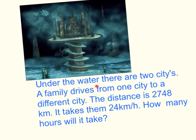Under the water, there are two cities. A family drives from one city to a different city. The distance is 2,748 kilometers. It takes them 24 kilometers per hour. How many hours will it take them?